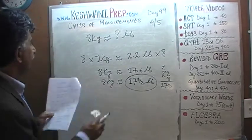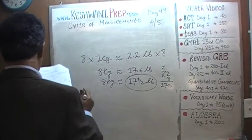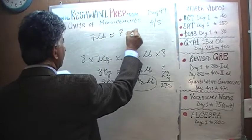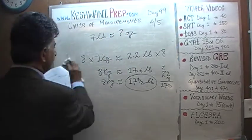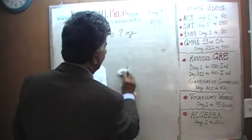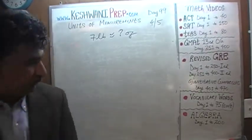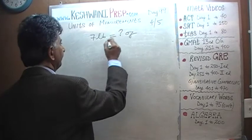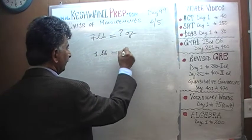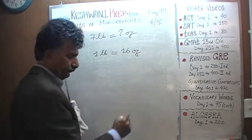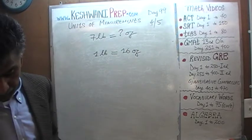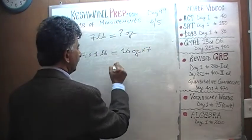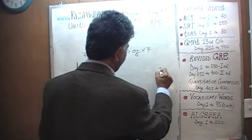Let's keep going. The next question is: seven pounds is how many ounces? Because we are going from English to English, we are not converting from English to metric, so we are looking for the exact answer. One pound equals sixteen ounces — we know that because we memorized it. Therefore, seven pounds would be seven times as much, so we need to figure out sixteen times seven.